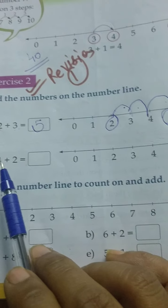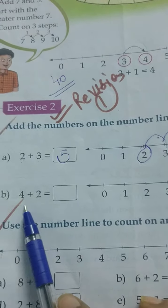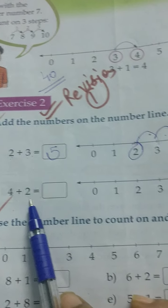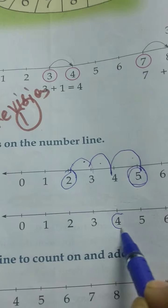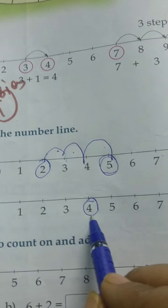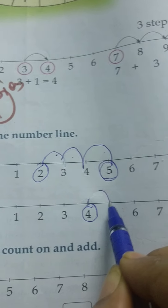Now see the next question: 4 plus 2. You need to start from 4, then jump 2 steps. Where is number 4 here? Put the circle on number 4. You want to jump 2 times: 1, 2.